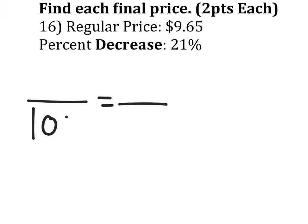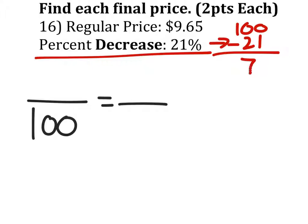So now I'm going to set up another percent proportion. Again, this is a different way that you could do it. Since it's a 21% decrease, this means that you would have paid 100 minus 21% of the price, which turns out to be 79% of the overall price. So the new percent now is 79, not 21.